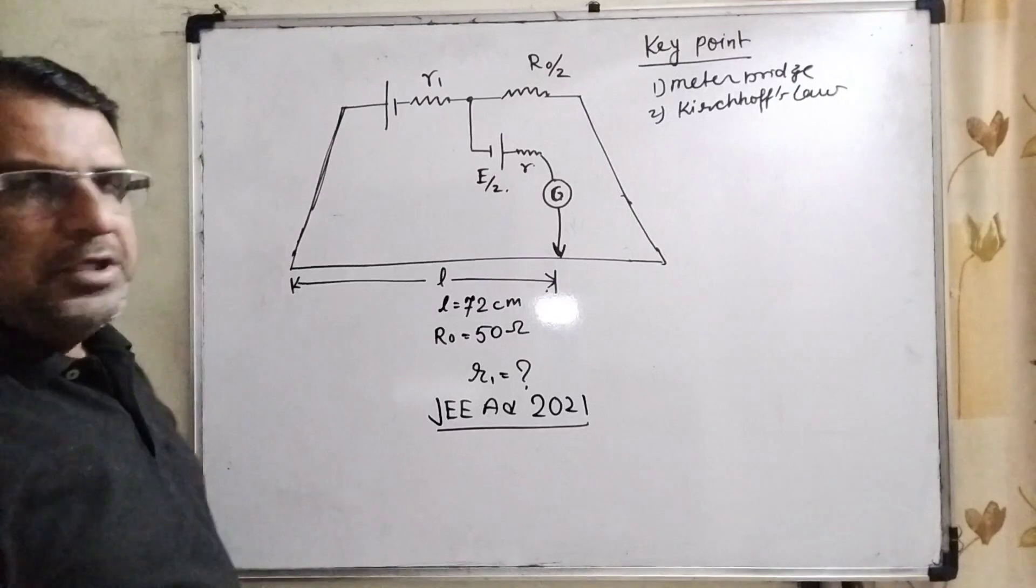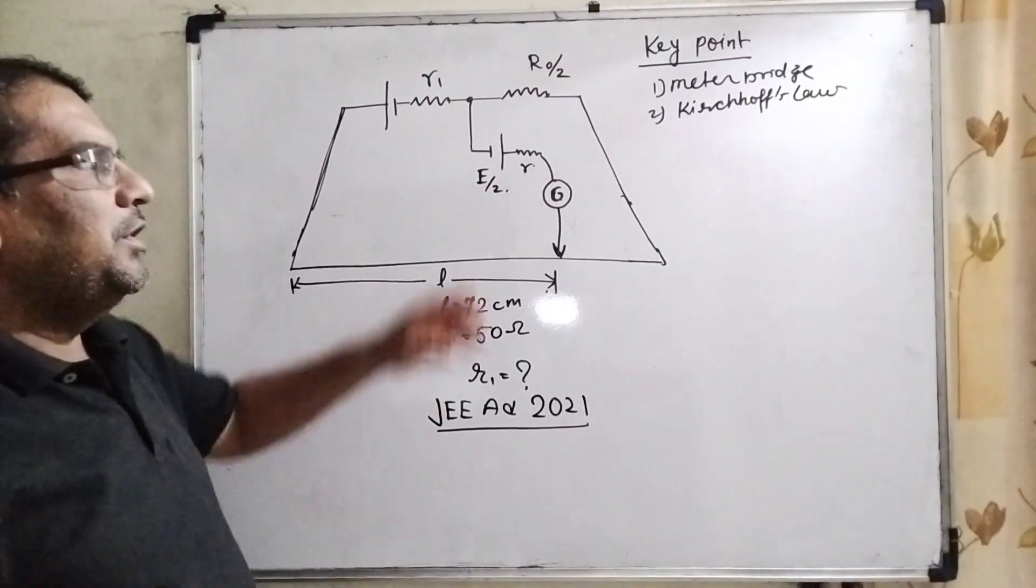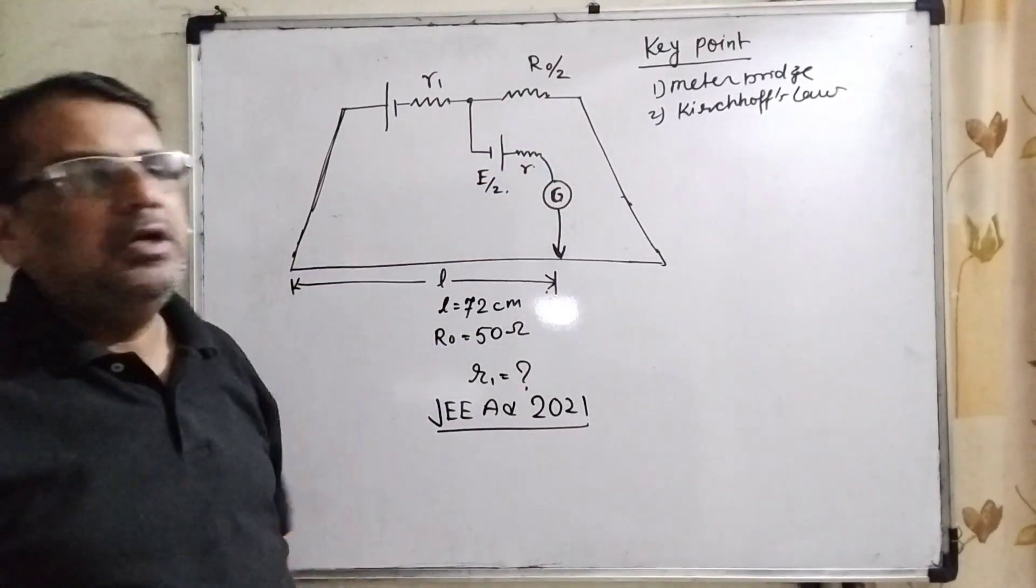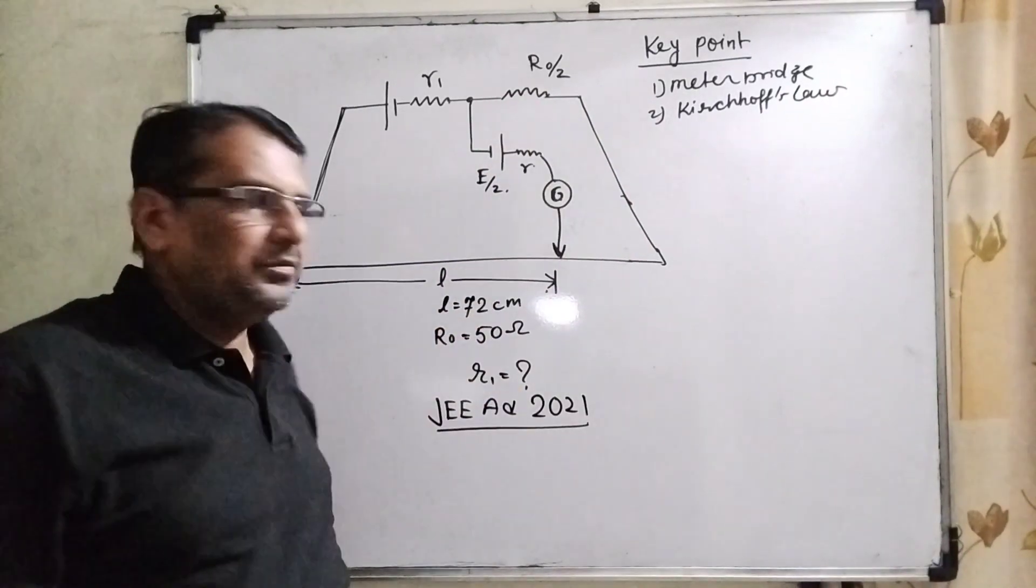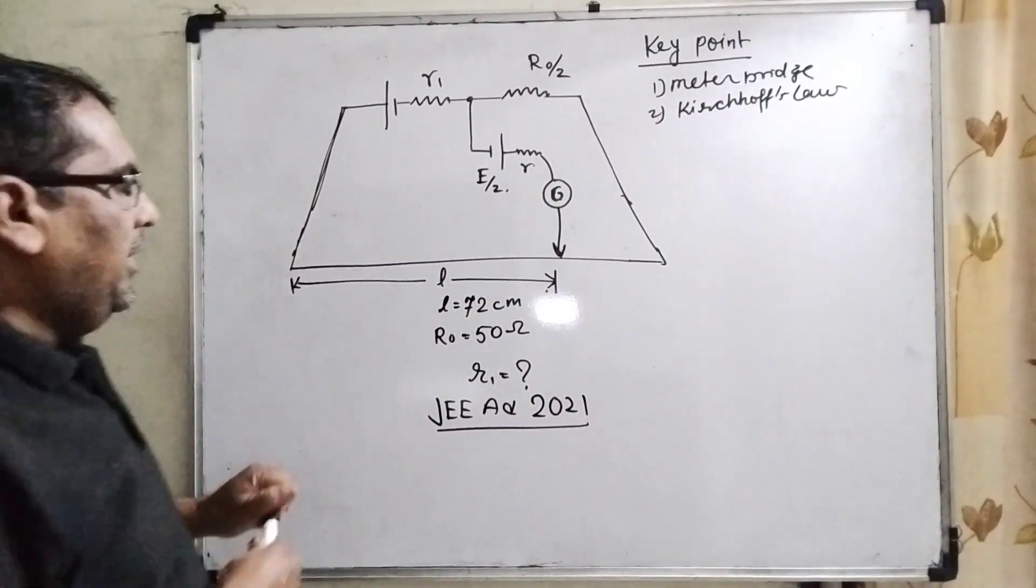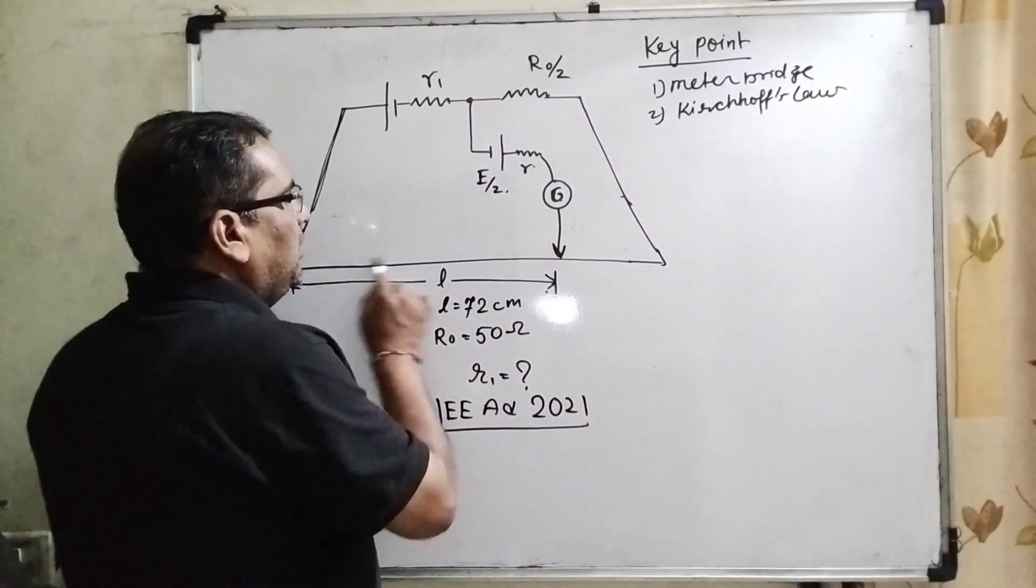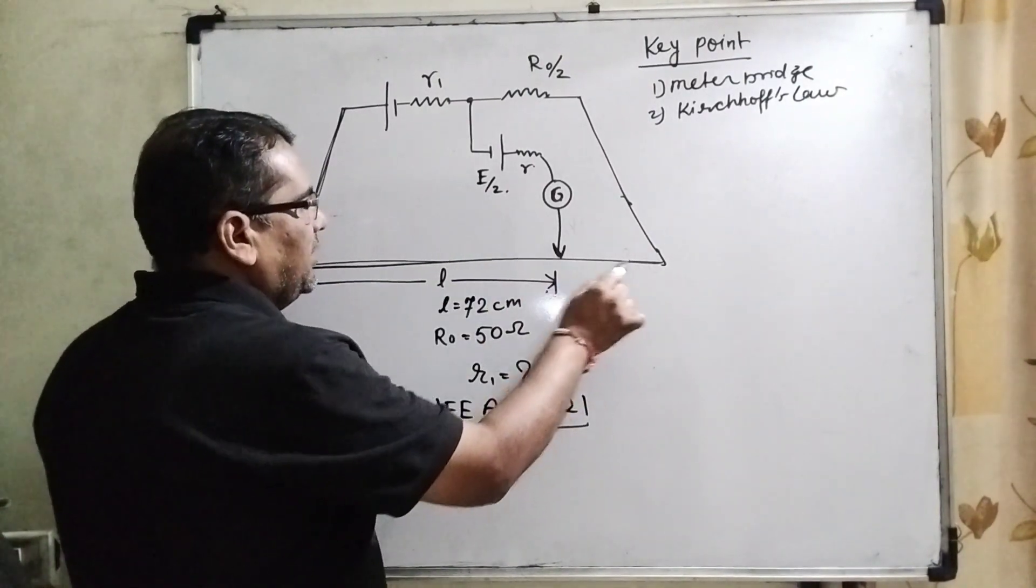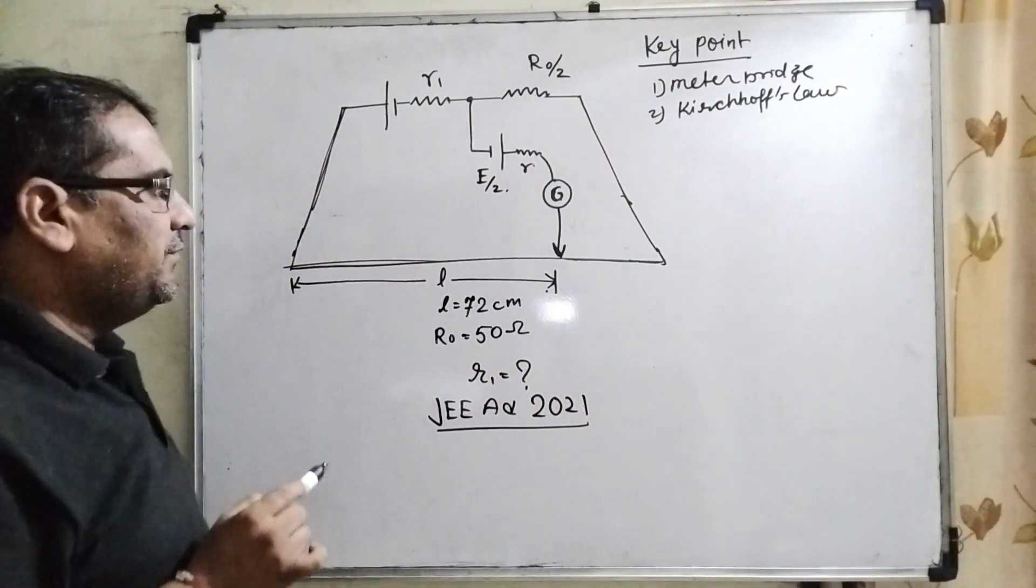To solve this question, we have to use two concepts: meter bridge and Kirchhoff's law. Here we have given the net resistance of this meter bridge wire is 50 ohms.